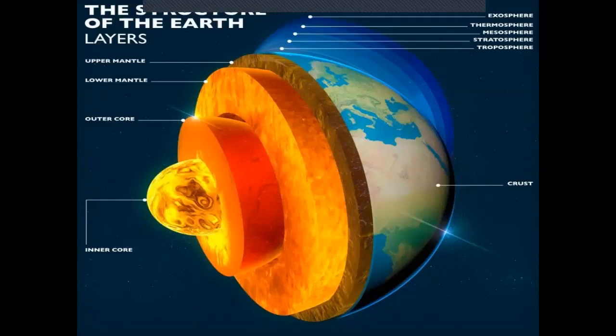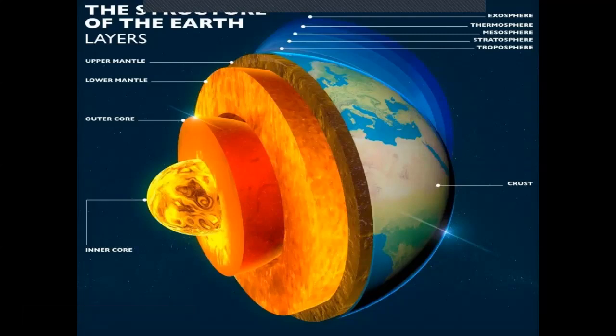Here's another graphic showing the same thing. You have the crust as the outer layer, then the upper and lower mantle as the second layer, then the outer core as the third layer, and the inner core as the final layer.